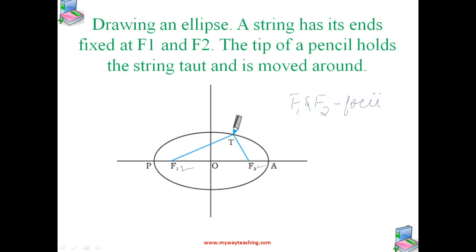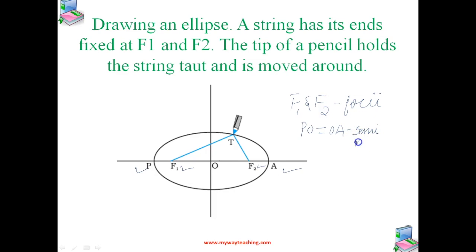Join the points F1 and F2 and extend the line to intersect the ellipse at points P and A. The midpoint O of the line PA is the center of the ellipse, so PO equals OA since O is the midpoint. This is called the semi-major axis of the ellipse. For a circle, the two foci merge into one and the semi-major axis becomes the radius of the circle. This is the first law of Kepler.